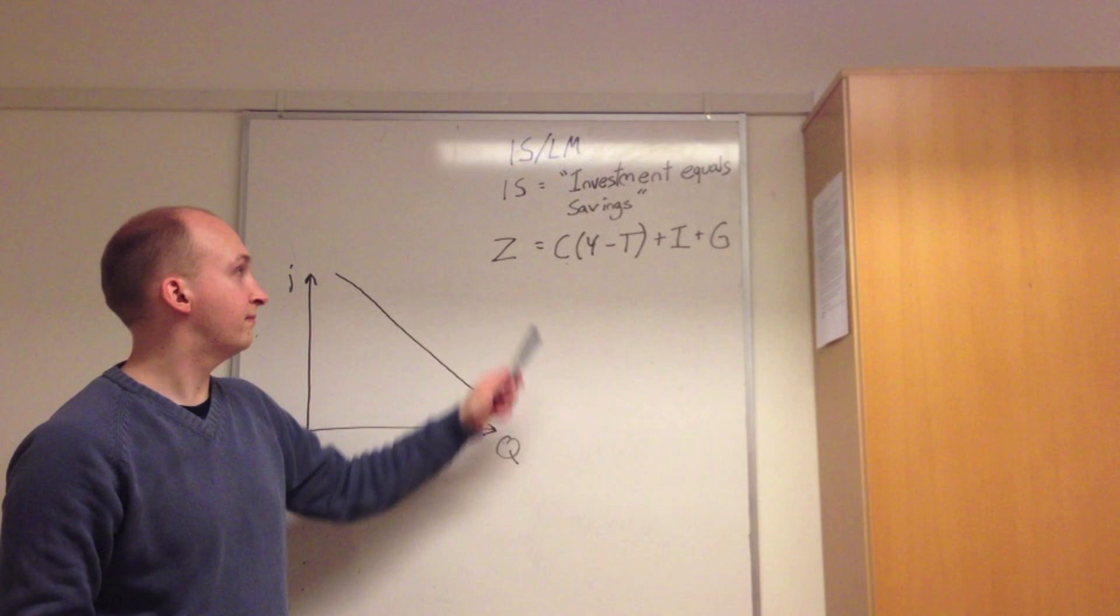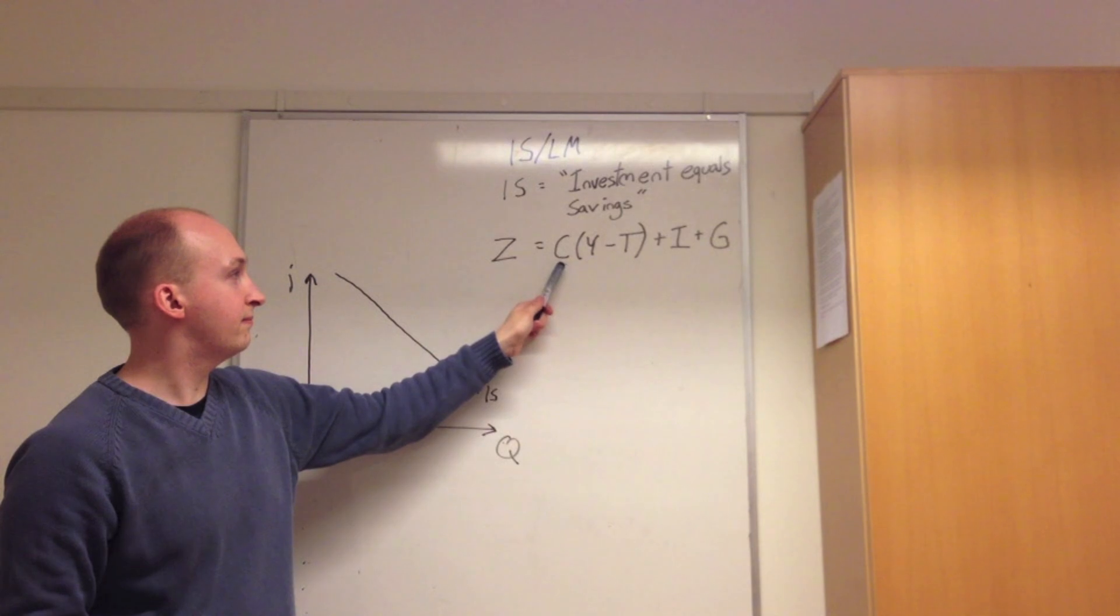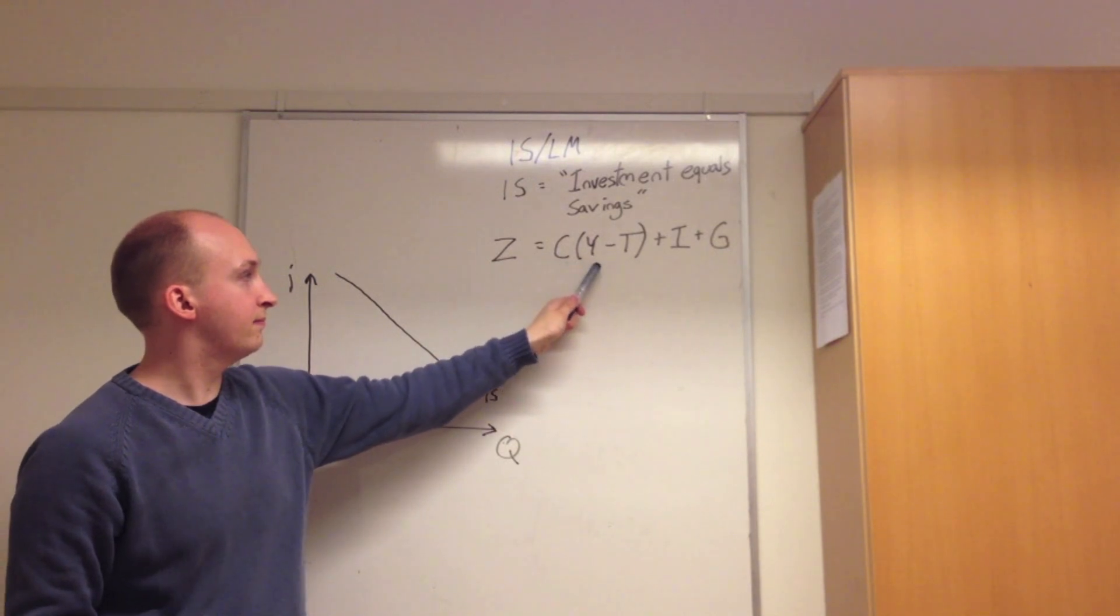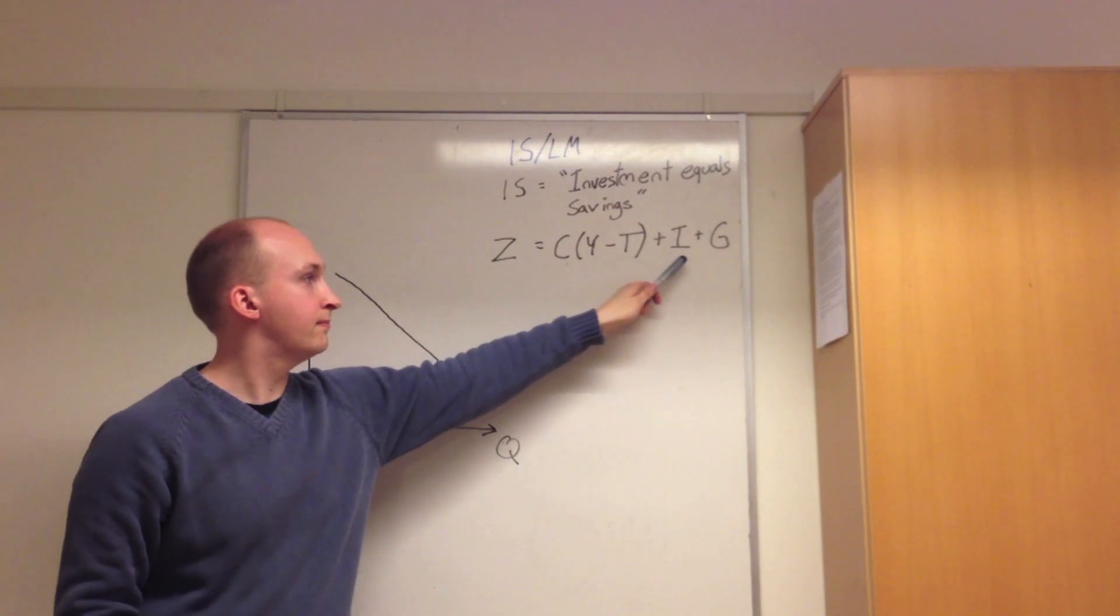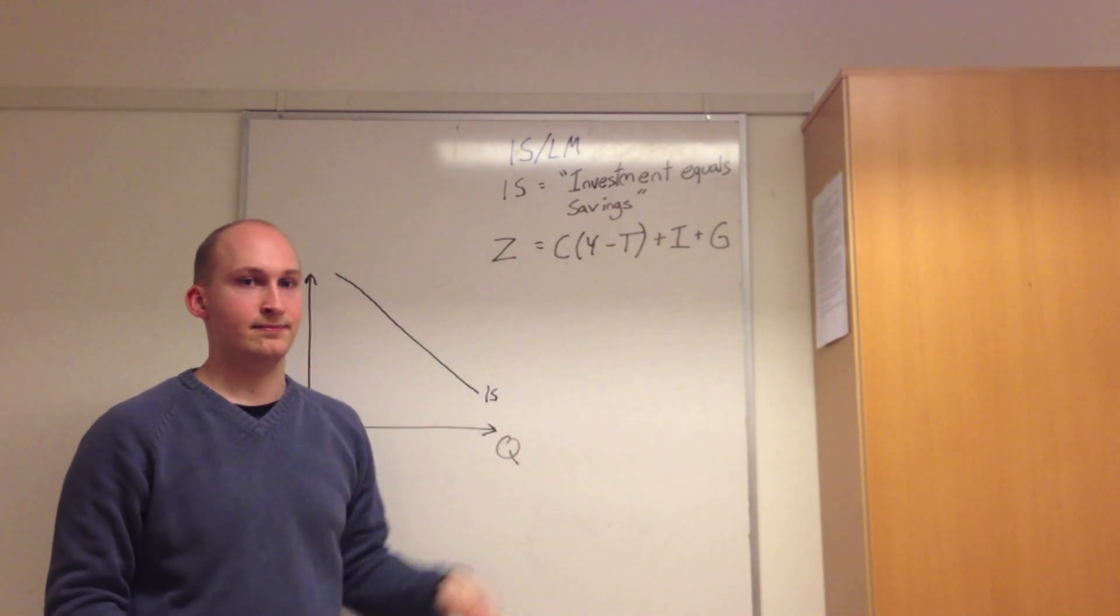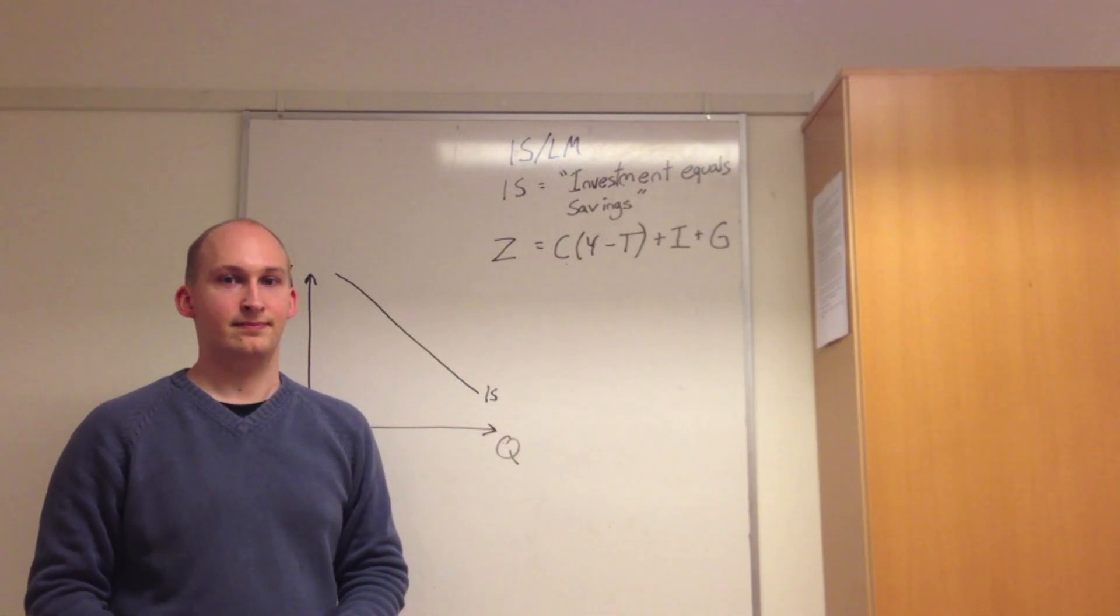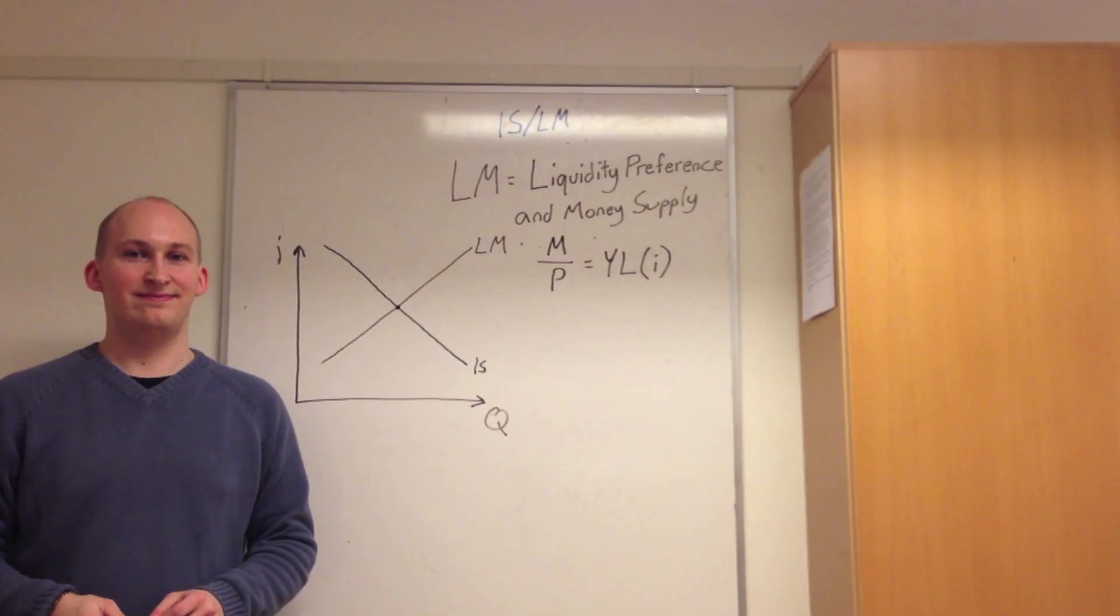Next, we come to the equation for our IS curve. Here we have Z being the total demand, C being the total level of consumption, Y being the total income, T being the total tax rate, I being the amount of investments, and G being the amount of government spending. The LM curve represents the equilibrium in the financial markets,